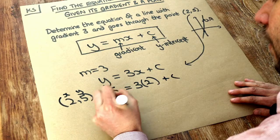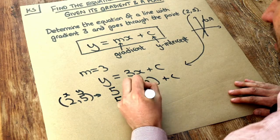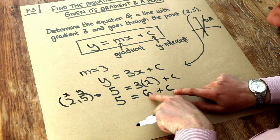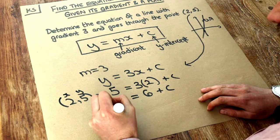Let's simplify that. 5 is equal to 3 times 2 is 6, plus c. Now I want to get the c on its own. We're adding 6 to it, so let's just minus 6 from both sides.